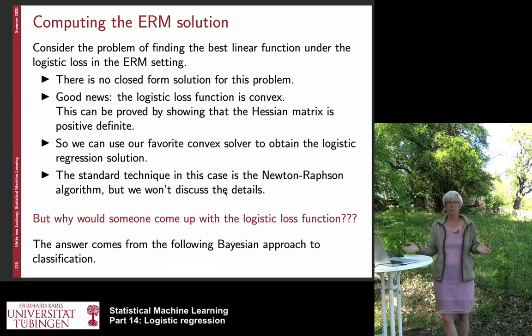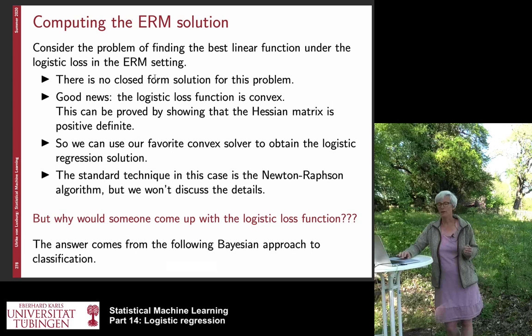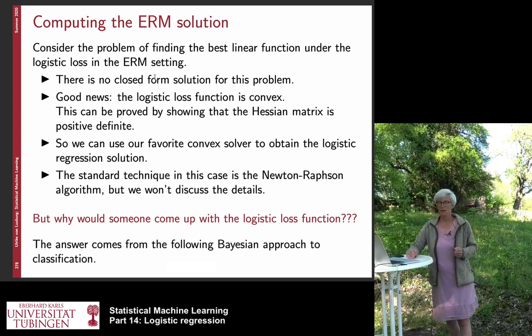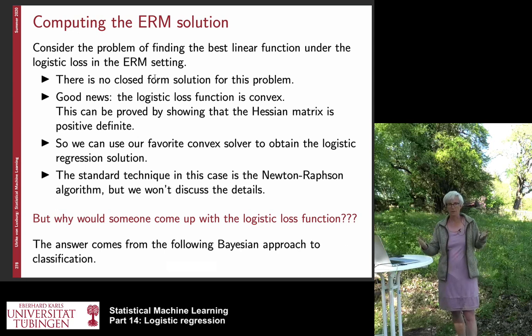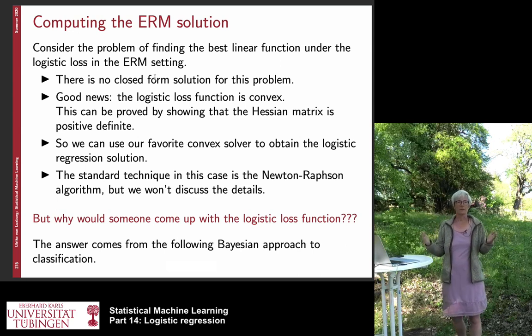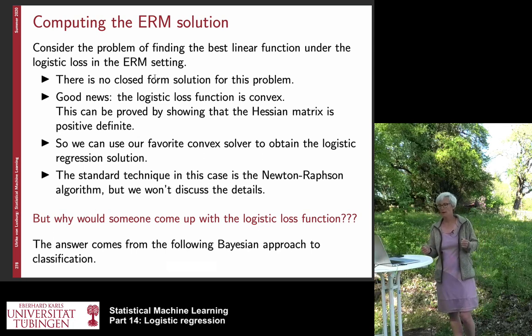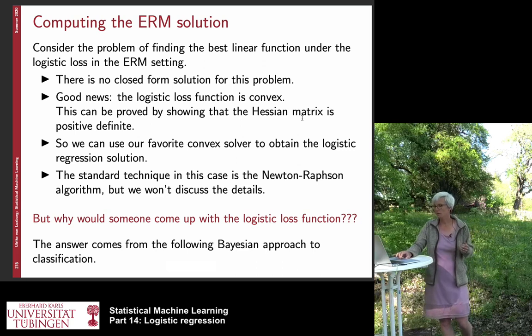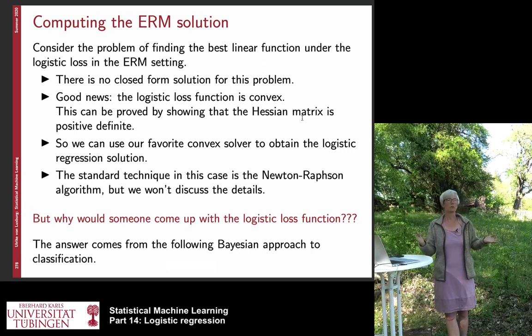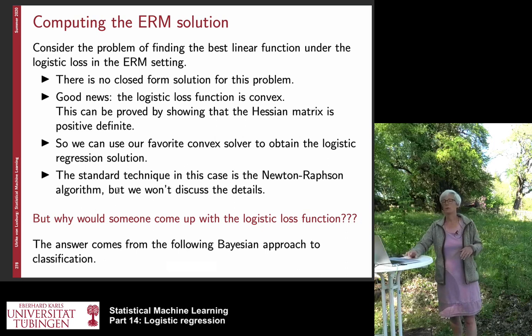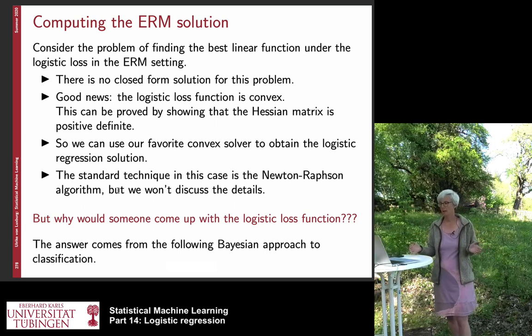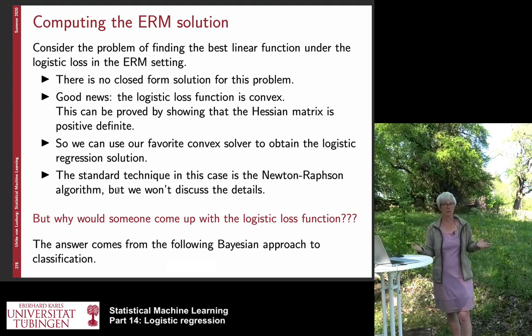And now we want to consider the empirical risk minimization framework. So we want to find the best linear function under the logistic loss. The first observation is that there is no closed form solution for this problem. So what you can do is you can plug it into your optimization solver. And the nice thing about the logistic loss is that it leads to a convex optimization problem. So this is easy to solve. And if you want to prove why this is convex, you can look at the Hessian matrix and prove that this Hessian matrix is positive definite. You might want to look into a textbook if you really want to do that. So you can use your favorite convex solver. And so of course people have tried to figure out what are the best solvers that you can use in this case. And the Newton-Raphson algorithm is one that works particularly well in this case. But as I said before, we are not going to discuss the optimization algorithms in detail here.